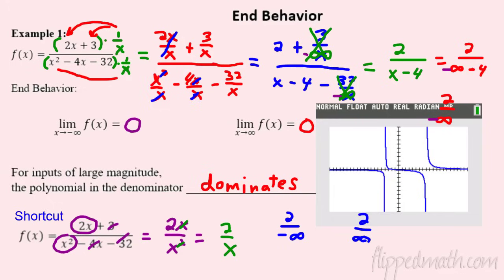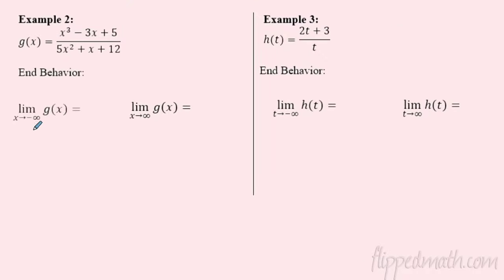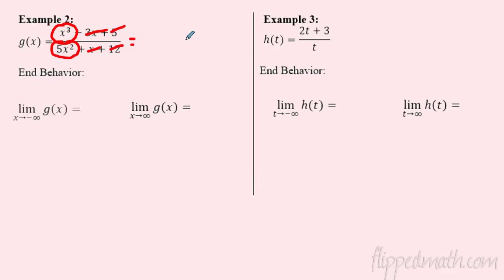Alright, example two. I'm looking at end behavior of g(x) — the limit going left and going right. My rational function has a third-degree polynomial on top and a second-degree (x squared) on bottom. Those are the key players — the rest are just chumps. Using the shortcut, I only care about the highest powers: x cubed on top and 5x squared on bottom. The x squared cancels two of the cubes, leaving just x on top and 5 on the bottom.